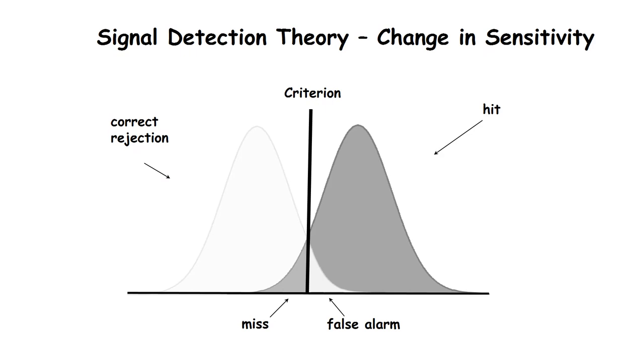Changes in sensitivity, when the signal is easier to detect, result in asymmetric changes in hits and false alarms. For example, increases in sensitivity result in increases in hits and decreases in false alarms.